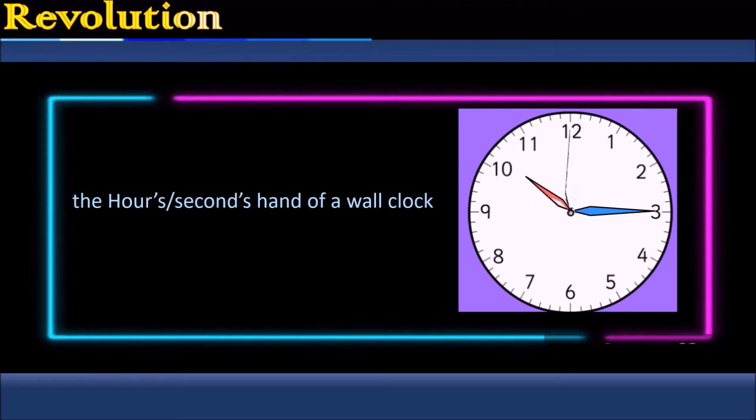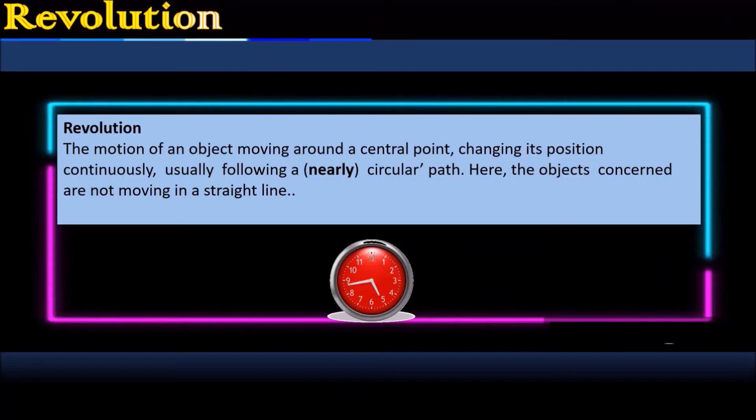It is revolution. So what is revolution? The motion of an object moving around a central point, changing its position continuously, usually following a nearly circular path is revolution.